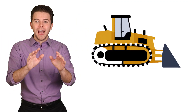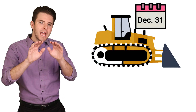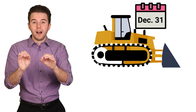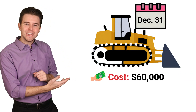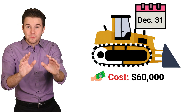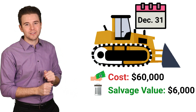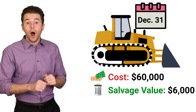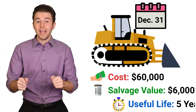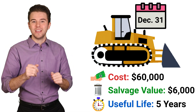Let's do an example. Assume a company purchased machinery on December 31st of year 1. The machine cost $60,000, and the estimated salvage value is $6,000. Also, the useful life is estimated to be 5 years.